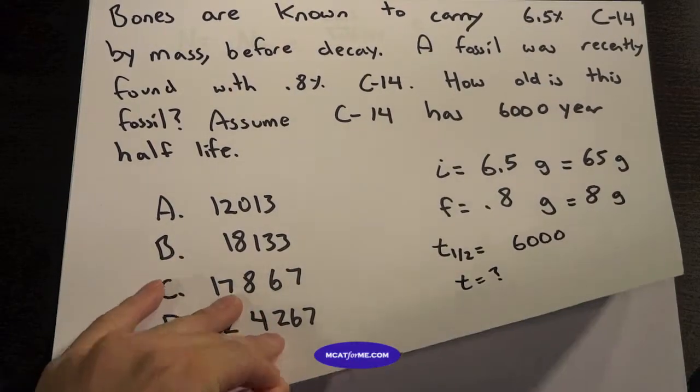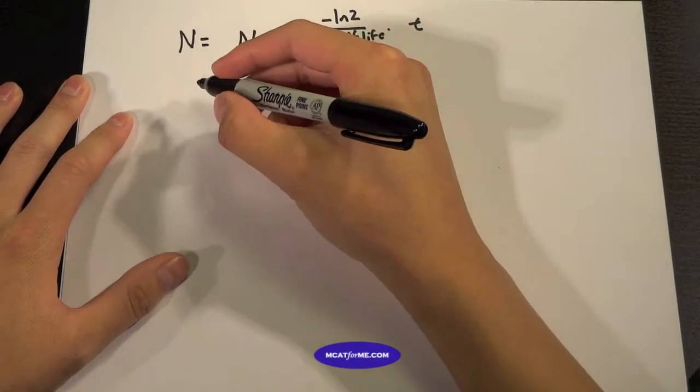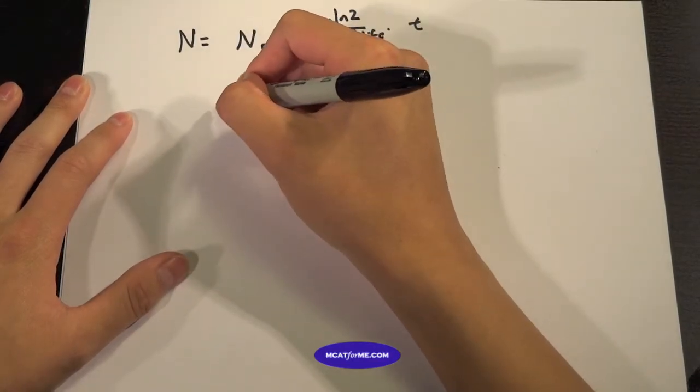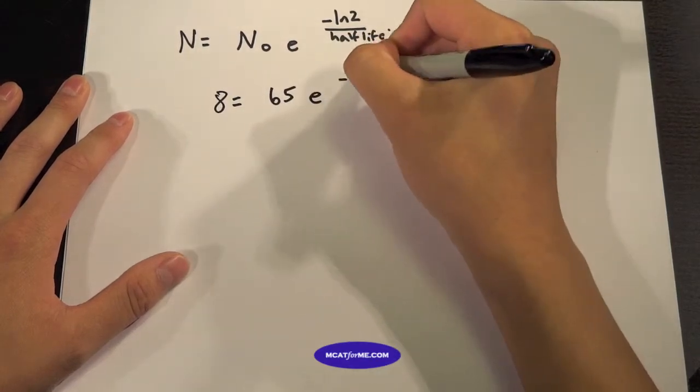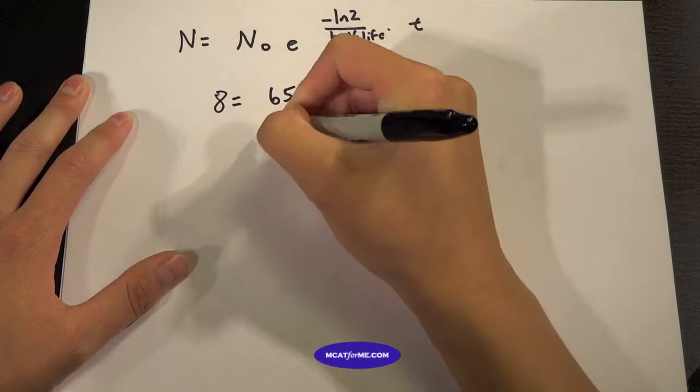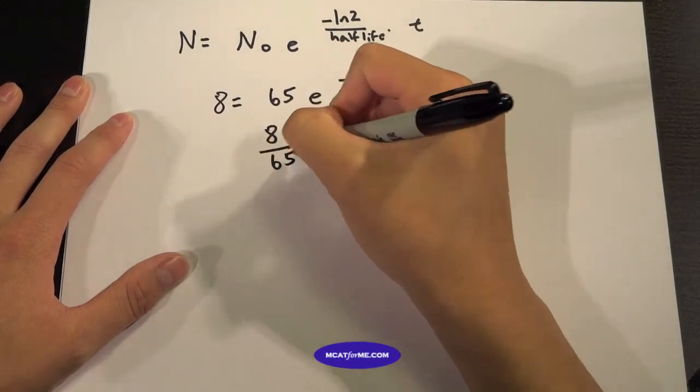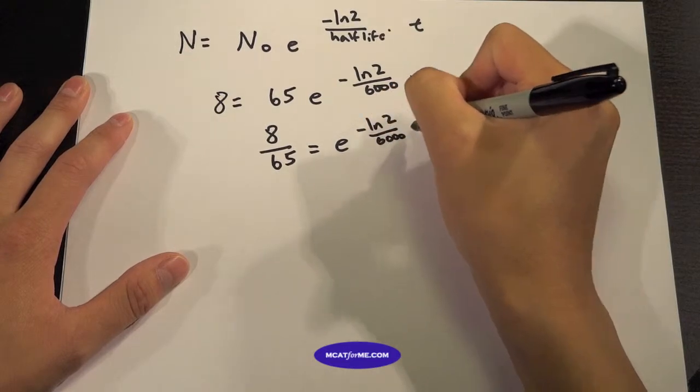So the first thing we can do is we have this equation right here. We have N equals N₀ e to the negative ln2 over half-life times t. So we can plug in our numbers. We know that our final is 8, initial 65, e to the negative ln2 over 6,000 times t.